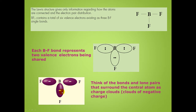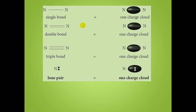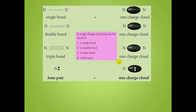Boron here has three charge clouds — it has three bonds. A single bond is equivalent to one charge cloud. A double bond is also equivalent to one charge cloud. A triple bond is equivalent to one charge cloud. And a lone pair is also equivalent to one charge cloud. So a single charge cloud can be the result of a single bond, a double bond, a triple bond, or a lone pair.